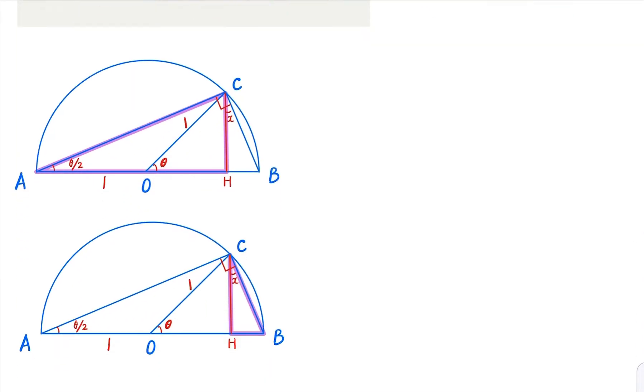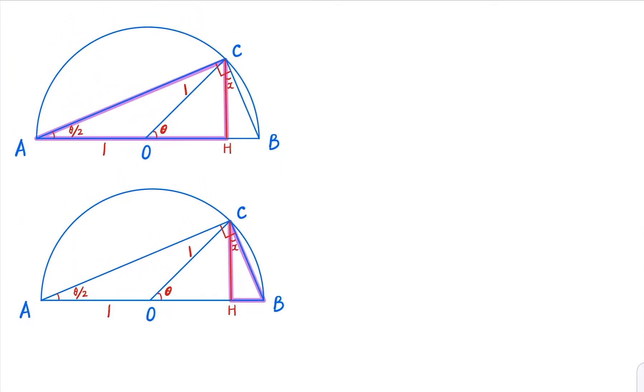So let's look at the first configuration here. The highlighted triangle, by definition, tangent of theta over 2 is going to equal CH over AH. What is AH here? AH is AO plus OH. And this is CH here.